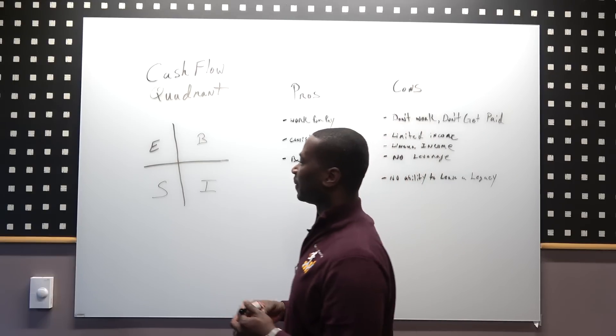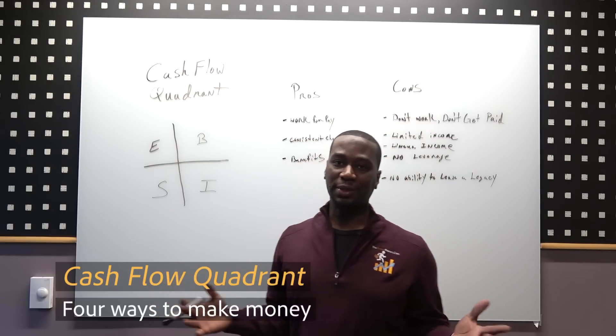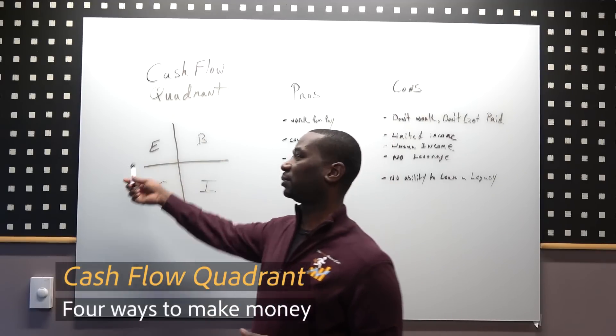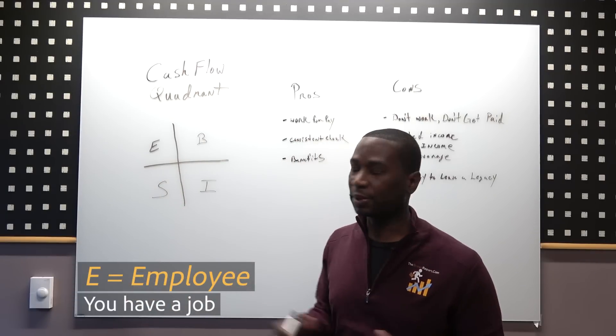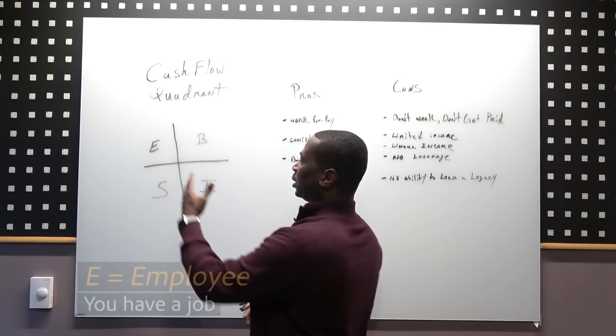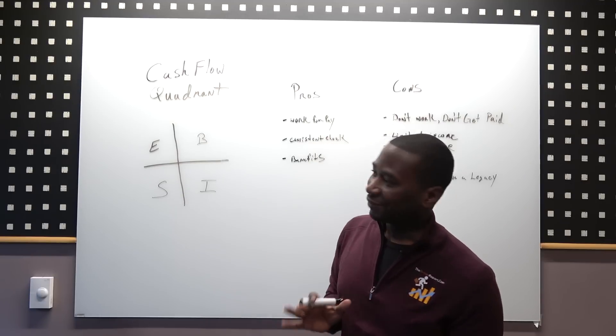Quadrant number one is the E, that's what most people are familiar with - the employee. The second side of the left side of the cash flow quadrant is self-employed.